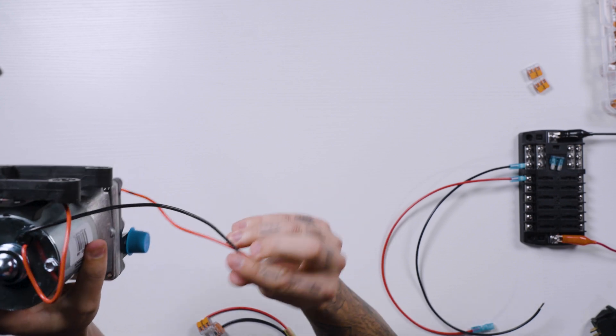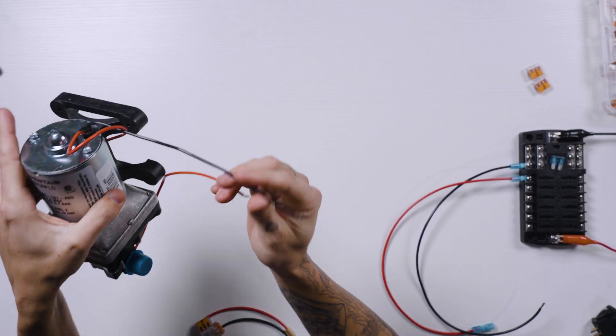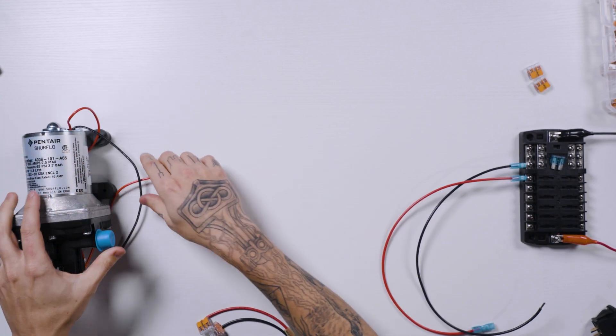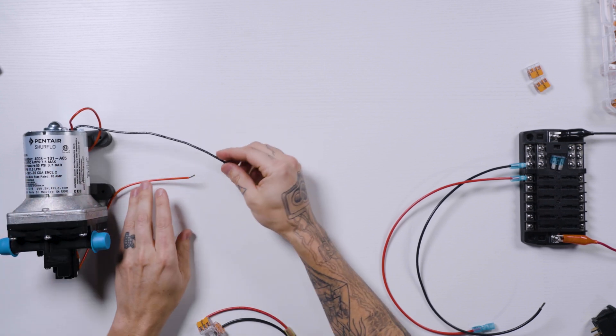There's just a positive and negative wire coming off of the pump. In this particular one, it's red and black, which is nice. Red for positive, black for negative.